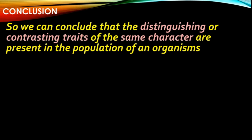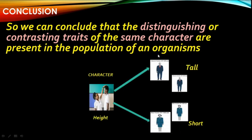By observing all these things, we can conclude that distinguishing or contrasting traits of the same character are present in the population of an organism. Look at this picture — imagine this is the population, a group of four people. Population is nothing but a group of individuals of the same species grouped together. In this population we consider the character height, and distinguishing traits of that same character are present. In the next session I will cover the father of genetics, Gregor Johann Mendel's work. Thank you very much for watching.